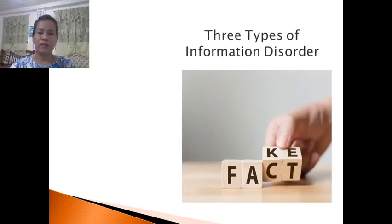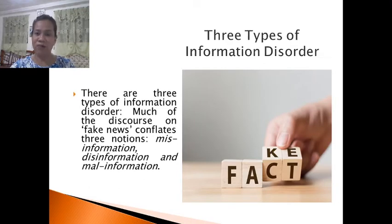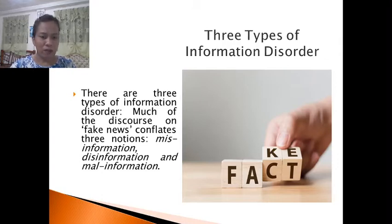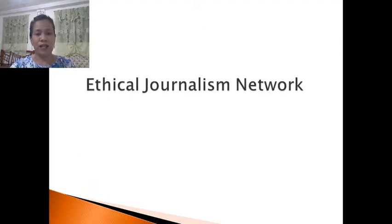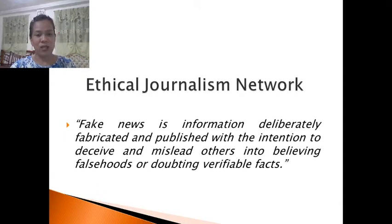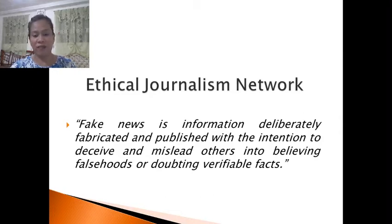Let's go to the three types of information disorder. You can see the picture — fact or fake. Fake news. How do you spot fake news? There are three types of information disorder: misinformation, disinformation, and mal-information. According to the Ethical Journalism Network, fake news is information deliberately fabricated and published with the intention to deceive others into believing false things or doubting verifiable facts.